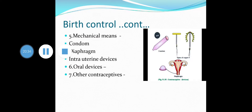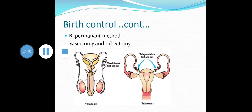Mechanical means include condom, diaphragm, and intrauterine devices like copper-T. Oral devices include pills and jellies used for contraception. In permanent methods, vasectomy and tubectomy are used. In vasectomy, the vas deferens is cut and tied to prevent the entry of sperm into the female reproductive tract. In tubectomy, the fallopian tubes are cut and tied to avoid entry of sperm into the site of fertilization.